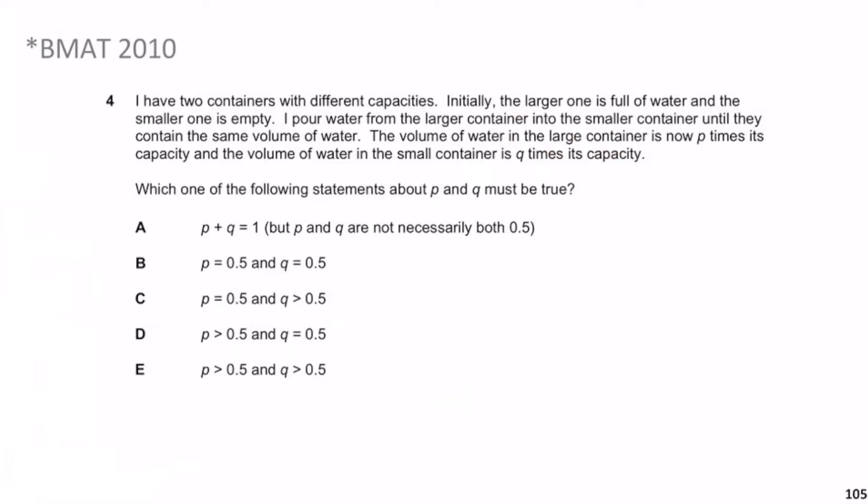Now we move on to BMAT 2010 Question 4 — another starred question. I have two containers with different capacities. Initially the large one is full of water and the small one is empty. I pour water from the large to the small until they contain the same volume. The volume in the large container is now p times its capacity and the small one is q times its capacity. Which of the following about p and q must be true?